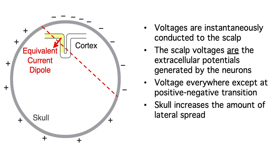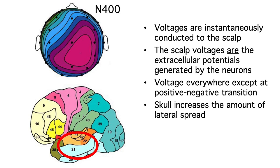Finally, the voltage fields from a given brain area spread out broadly as they're conducted through the brain, and the high resistance of the skull causes them to spread even more widely. In many cases, the electrode with the largest voltage is quite far away from the generator. For example, the N400 appears to be generated way down in the temporal lobes, but we see it on the scalp at the central and parietal electrodes.